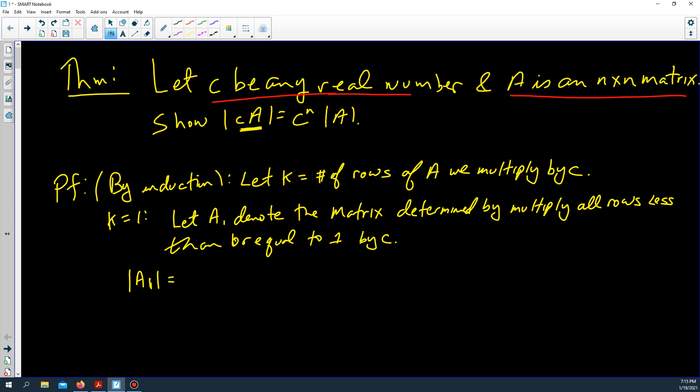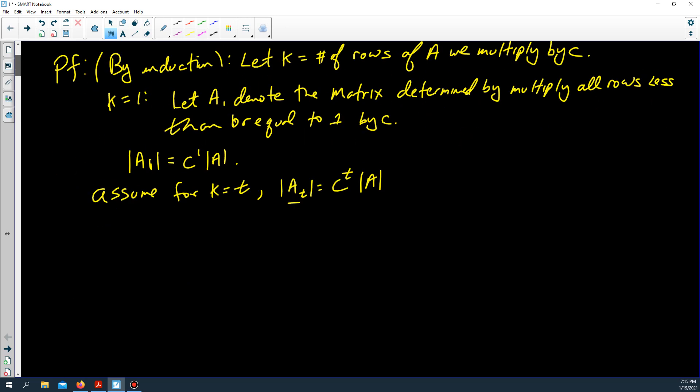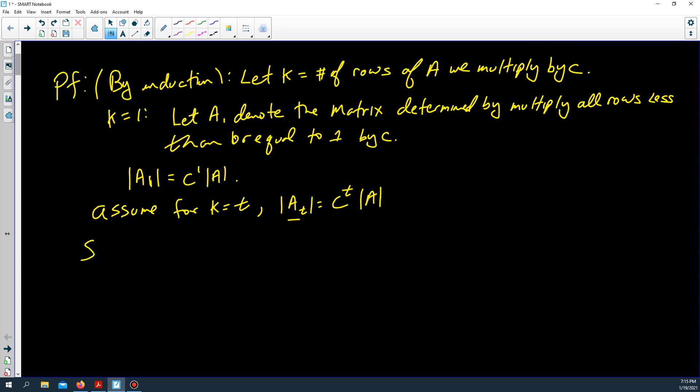Now we assume for k equals t, the determinant of A_t is c to the t times the determinant of A. Remember A sub t is just matrix A where the first t rows are multiplied by this number c.